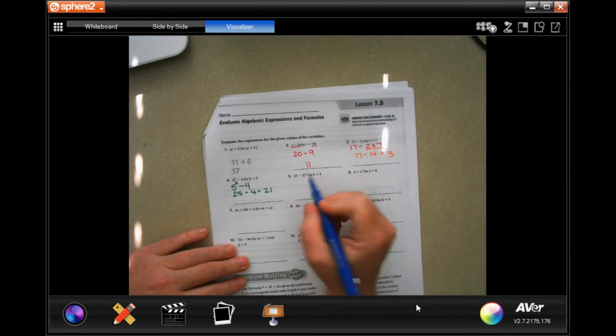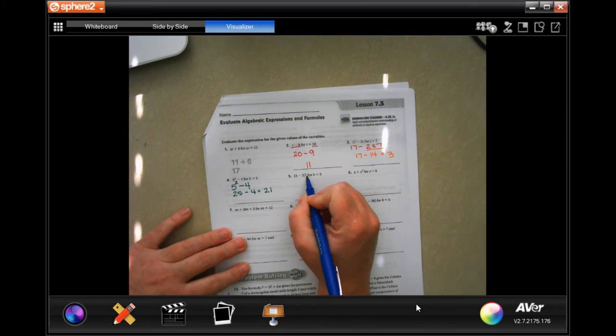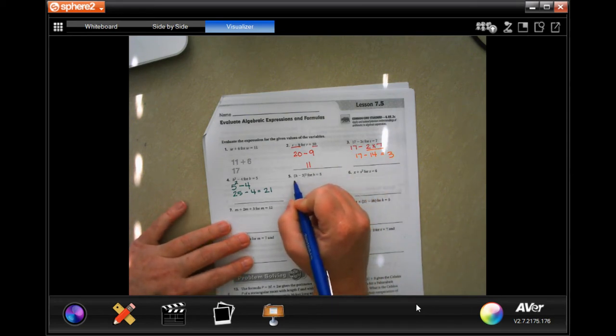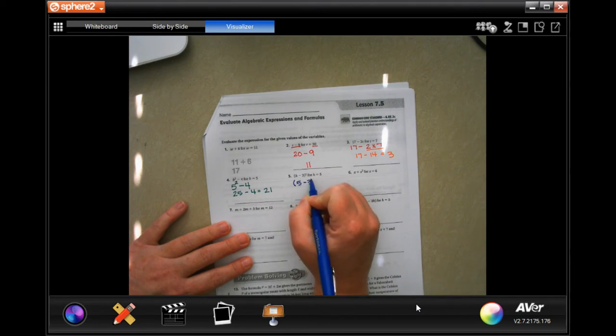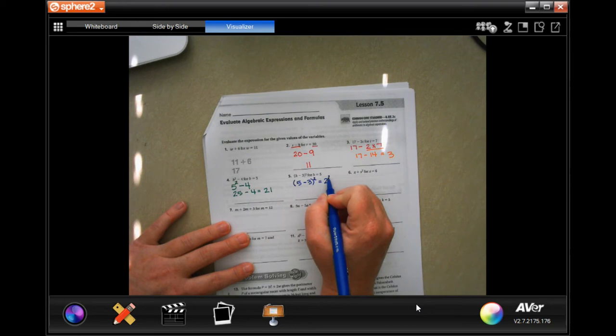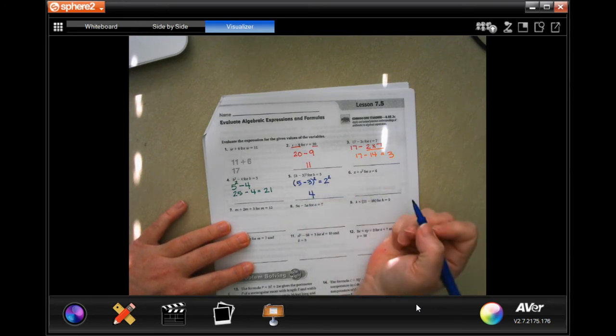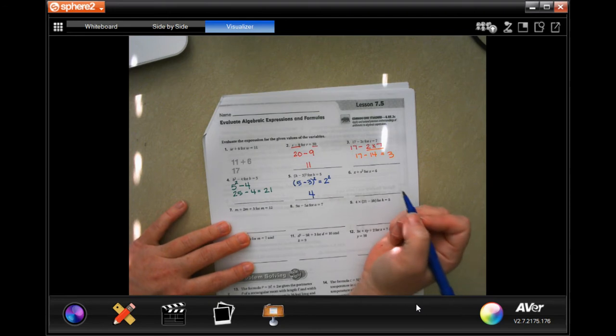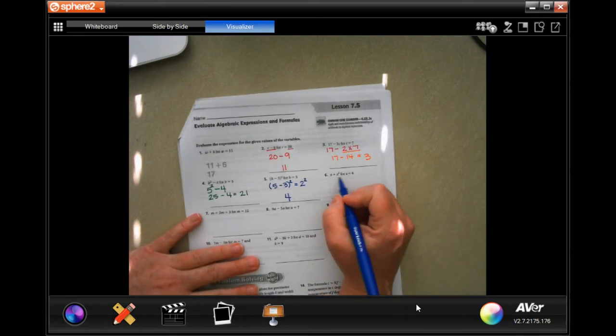So this one has the exponent outside of the bracket. I'm going to fill in 5 where it says H, and then I'm going to put that exponent up there. Well, 5 minus 3 is 2, and that's 2 squared. So 2 times 2 is 4. We're going to do one more.